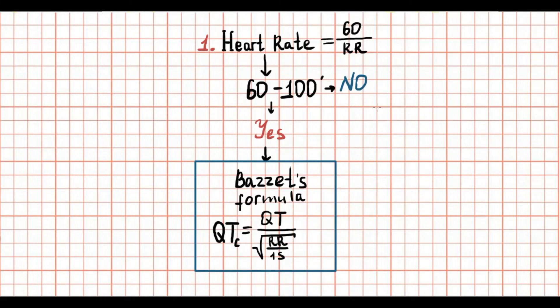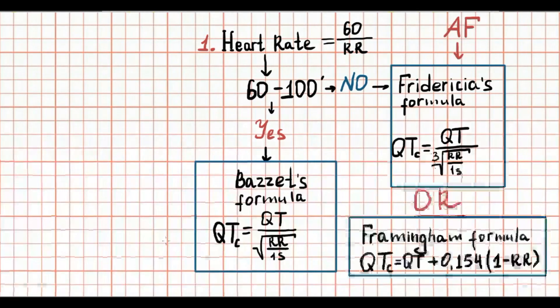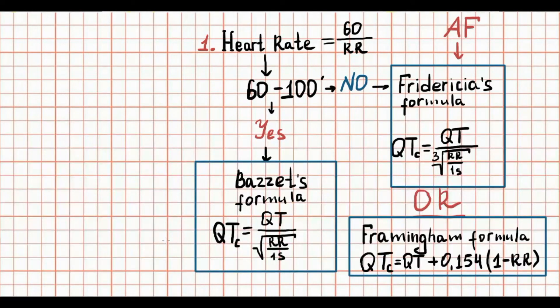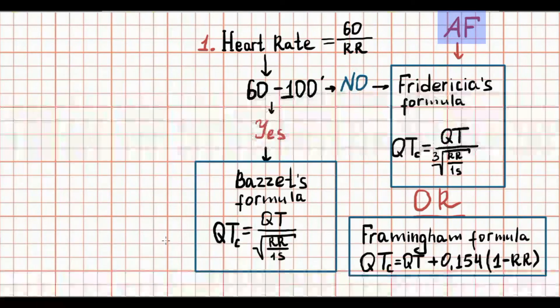What if the heart rate is less than 60 or more than 100? We usually use Fridericia or Framingham formula. For calculation QTc in atrial fibrillation cases, you can also use Fridericia formula.